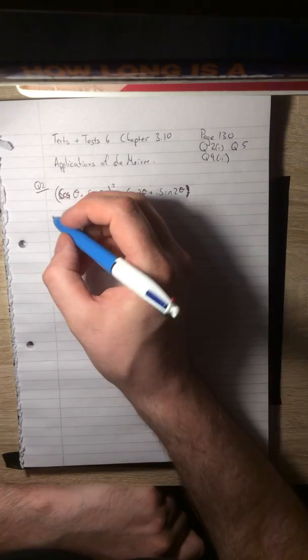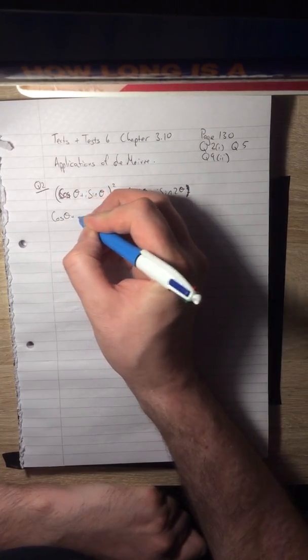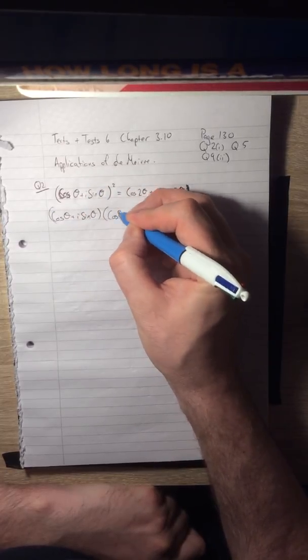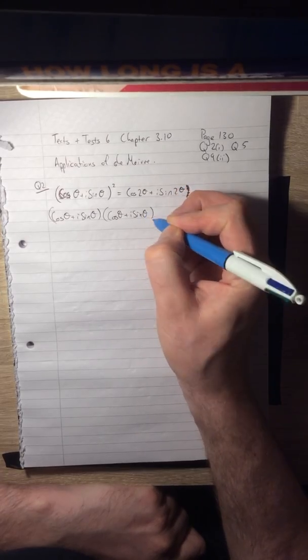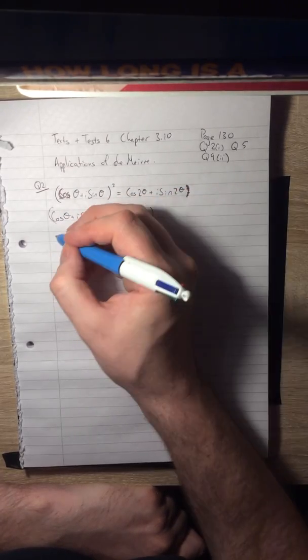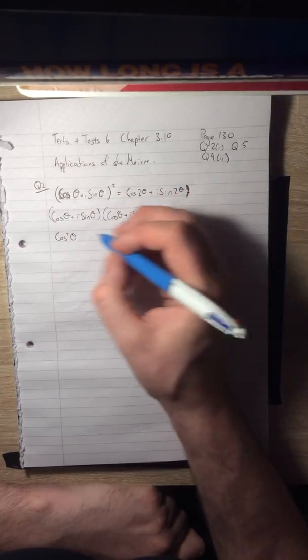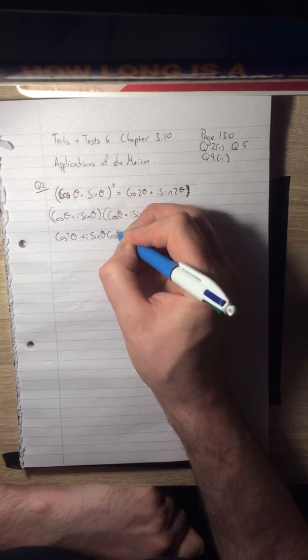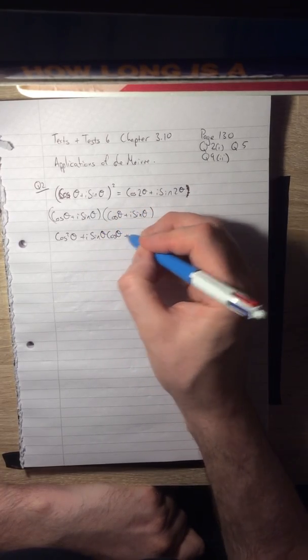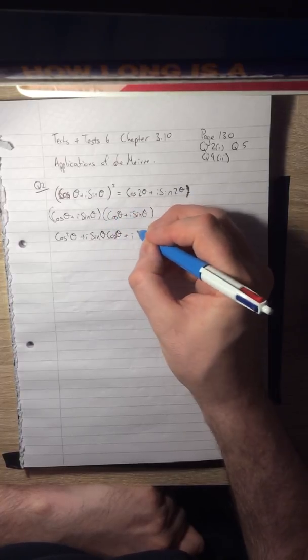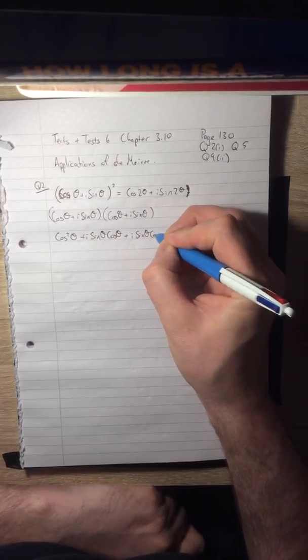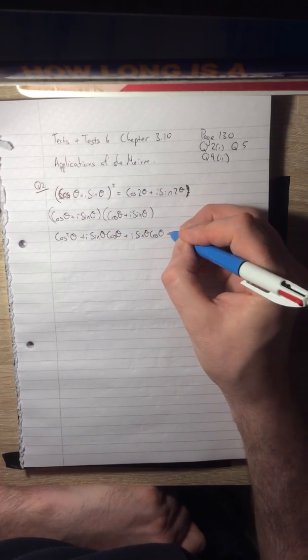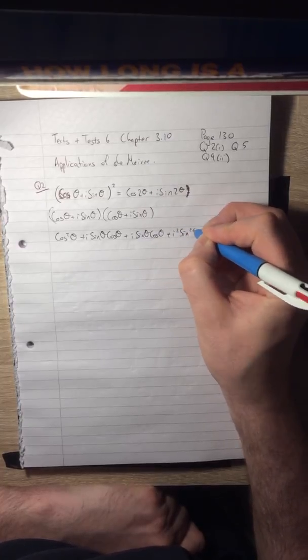So if we square out this left-hand side here, we get (cos θ + i sin θ)(cos θ + i sin θ). Cos by cos is cos²θ plus i sin θ cos θ plus i sin θ cos θ, and i sin θ by i sin θ is i² sin²θ.